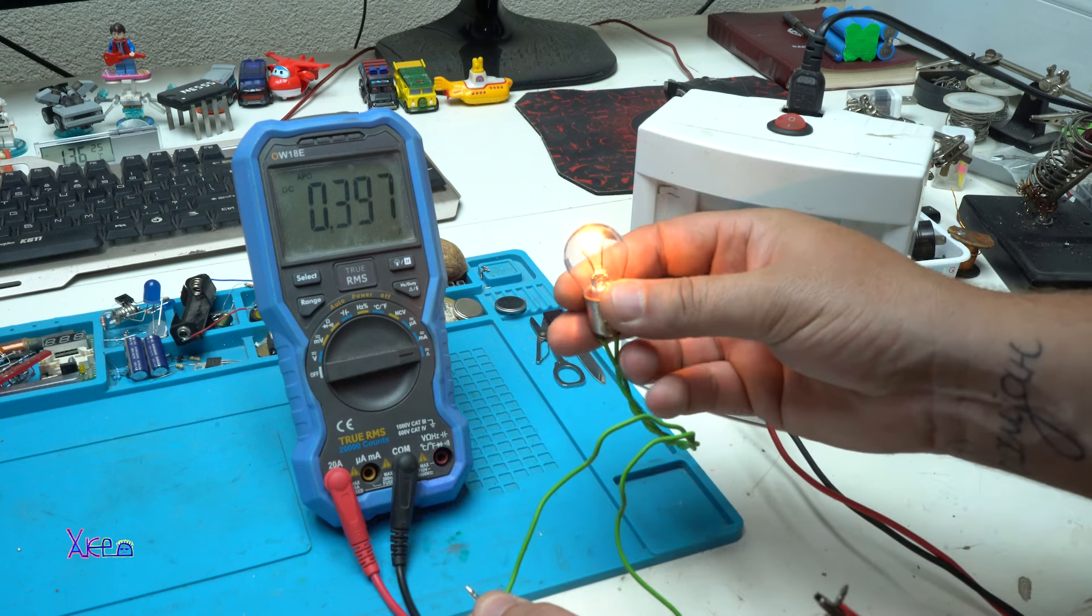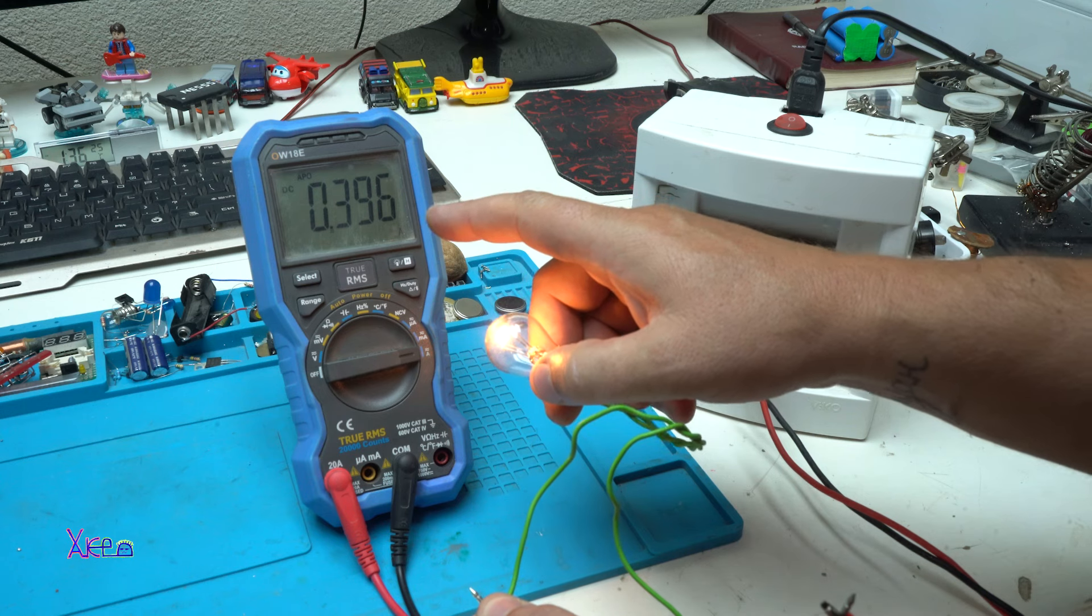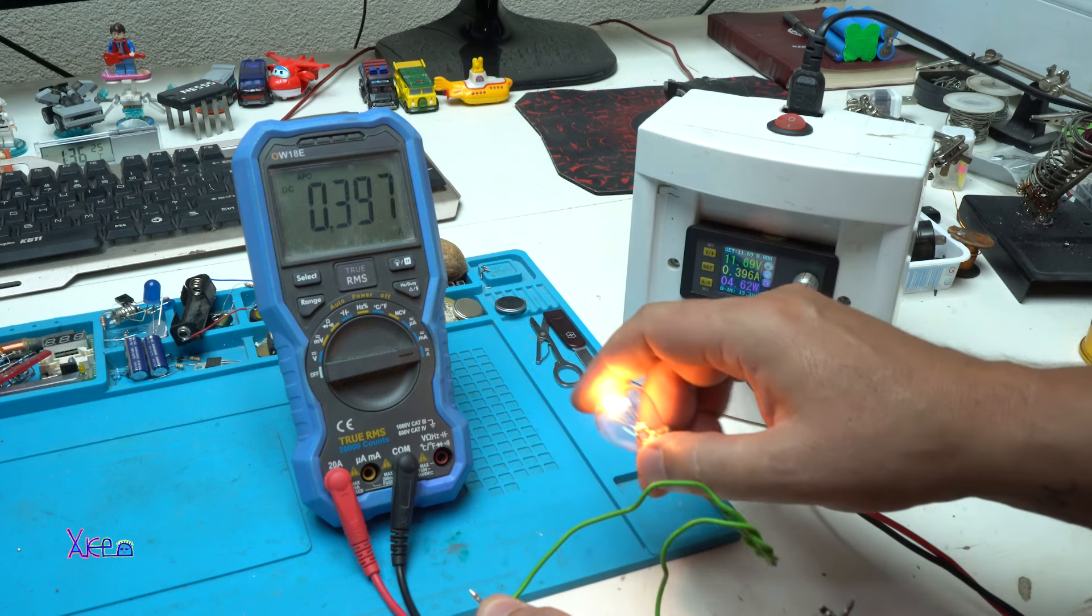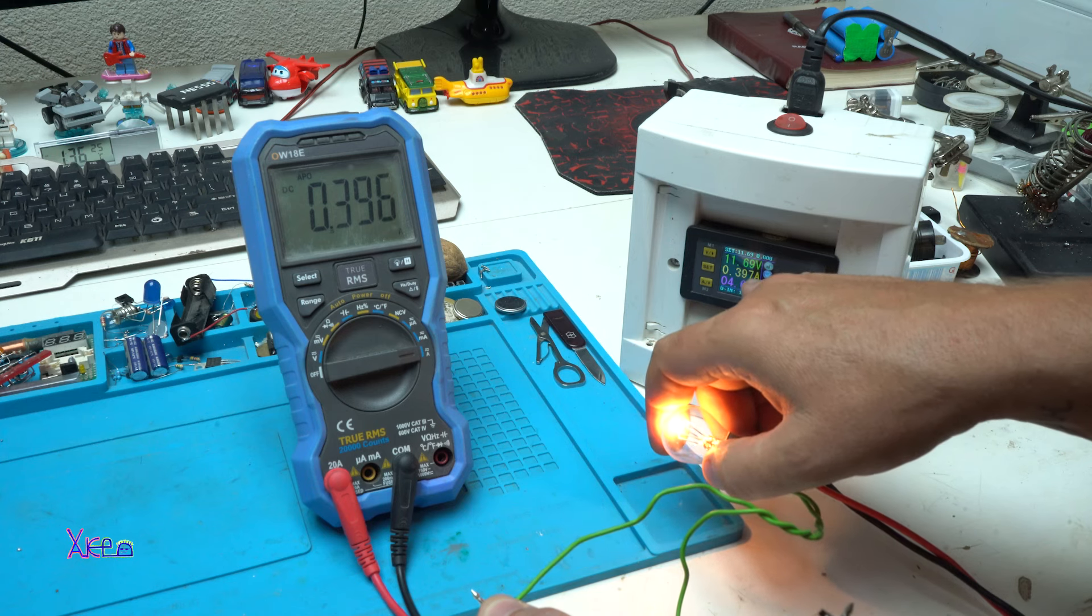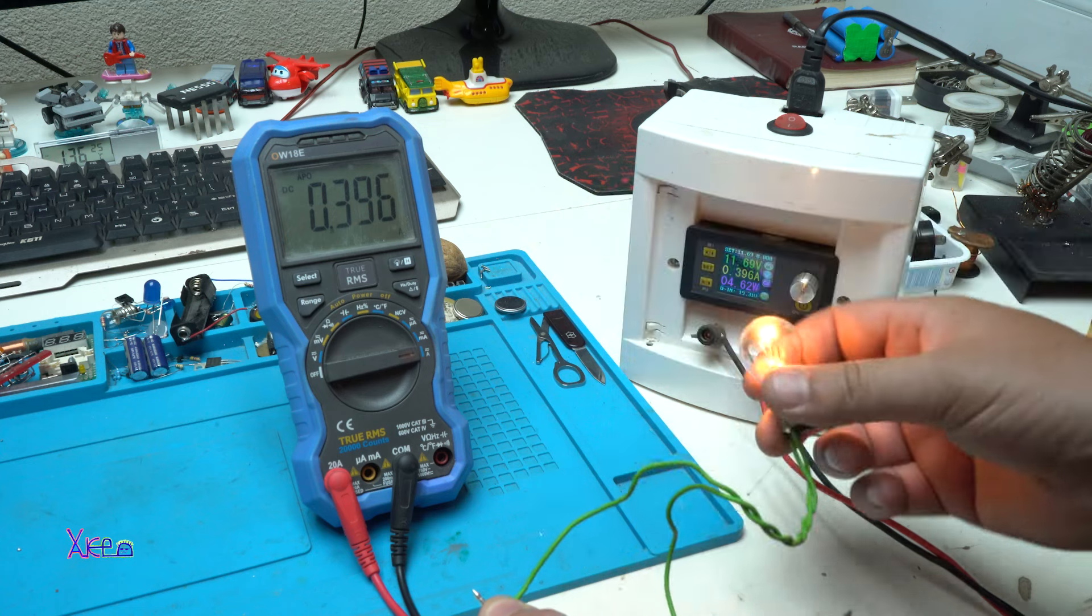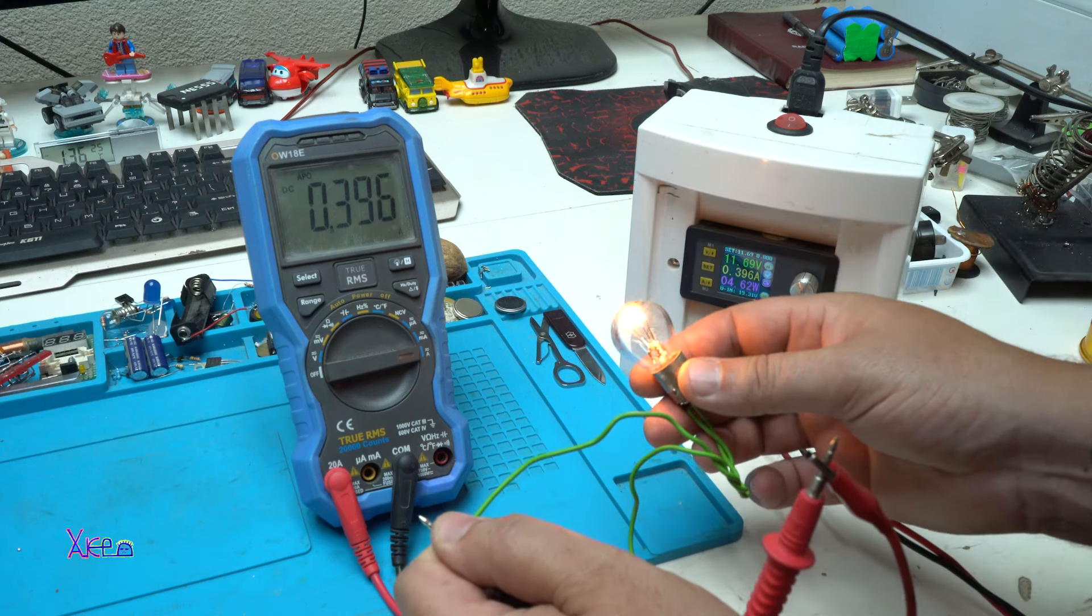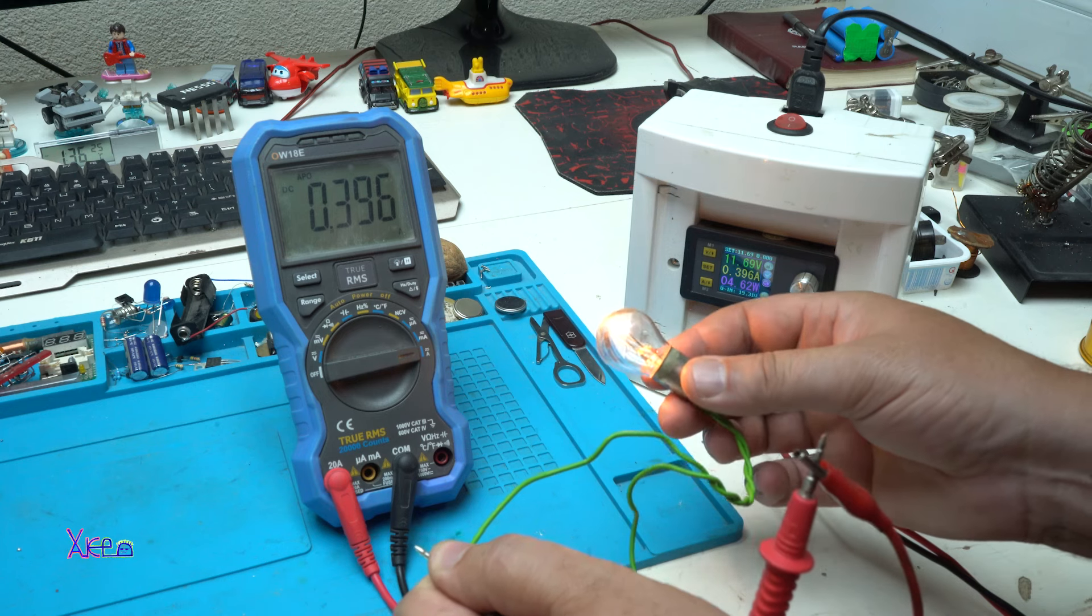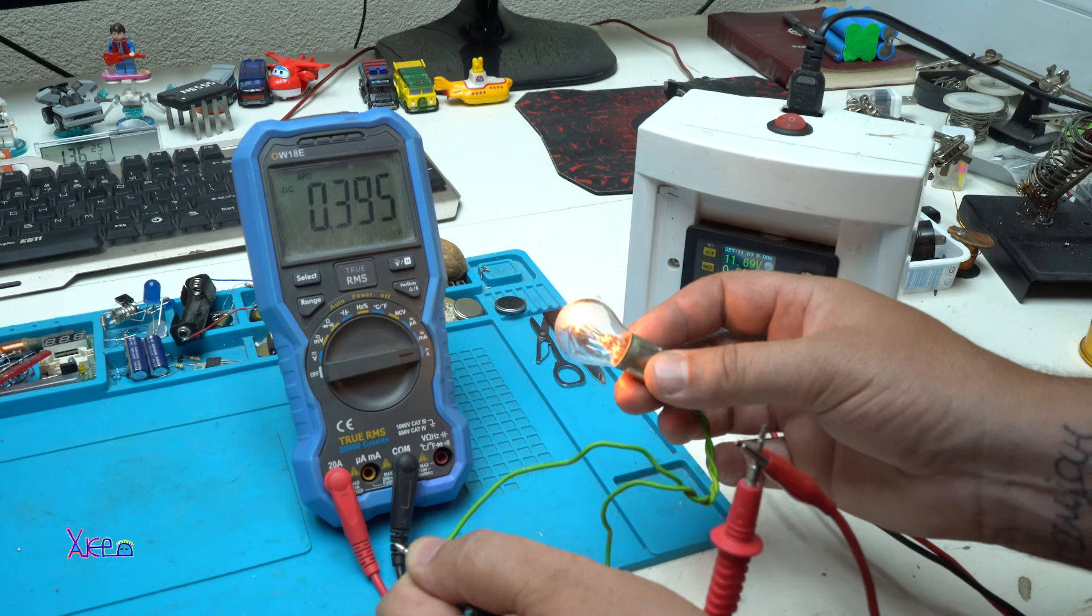And here it is. It's pulling around 300, almost 400 milliamps. And it's the same on the digital power supply 397, 397 and working. And this is the way if you want to check the bulb, how much current is pulling.